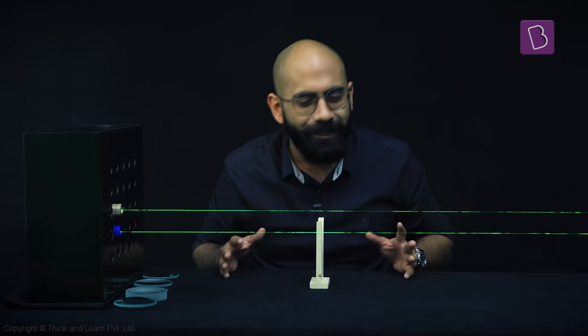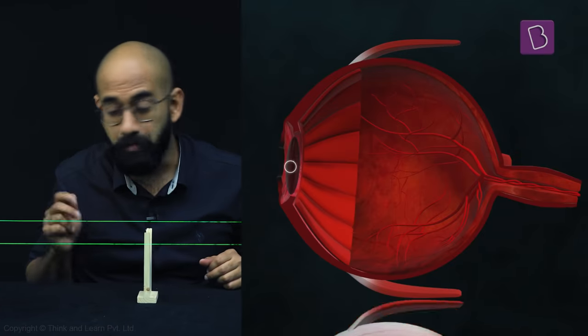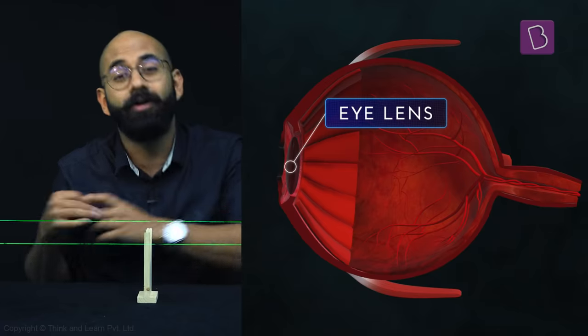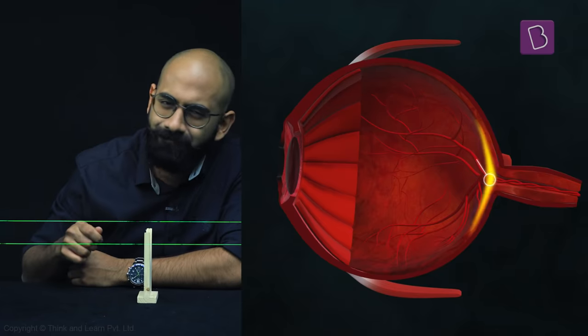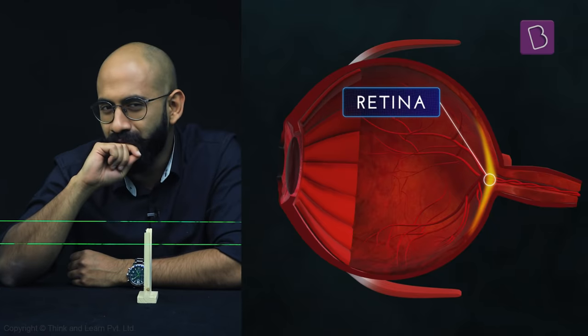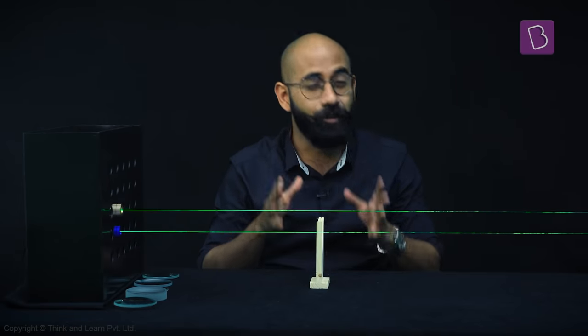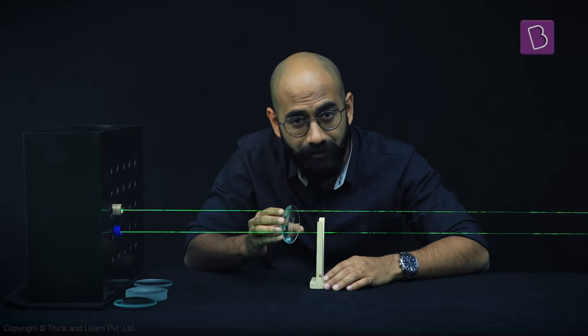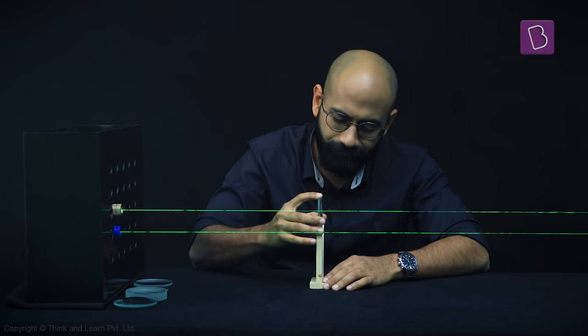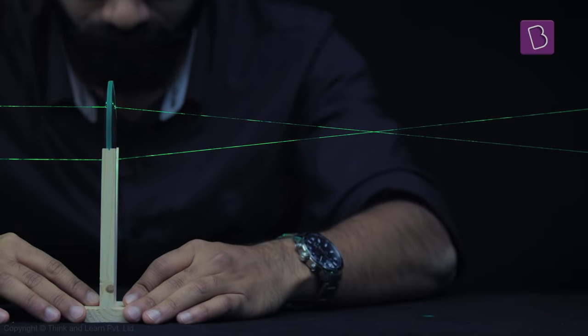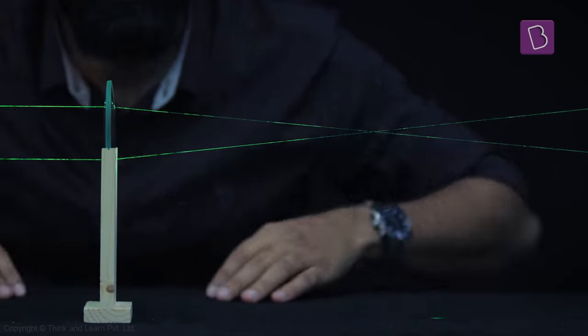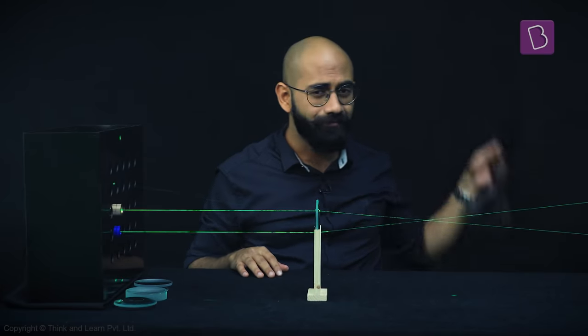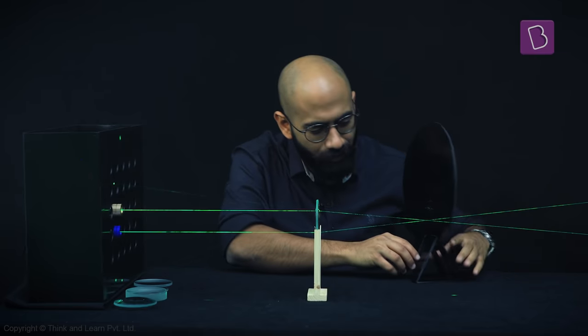Now the human eye basically consists of two main parts: a biconvex converging lens, which we call the eye lens, and a screen, which we call the retina. So let's try to simulate the human eye over here. Let's say that this biconvex converging lens plays the role of our eye lens. Okay, and I have a screen over here that's going to play the role of our retina.